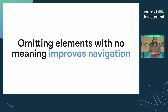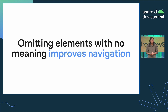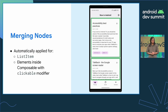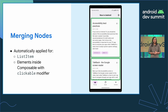The reason Compose doesn't include elements with no semantics is because omitting these elements with no meaning improves navigation for users of Accessibility Services, allowing them to more easily navigate through your app by interacting only with the meaningful elements. What this means is that sometimes Compose finds the need to merge nodes — grouping certain content together to enable easier navigation. This is automatically applied for items inside a list, and also for any elements inside a Composable with a clickable modifier.